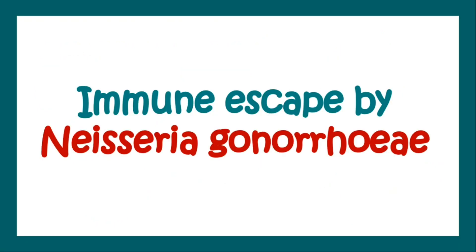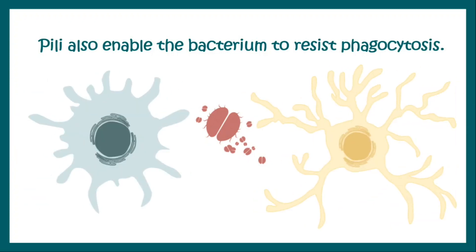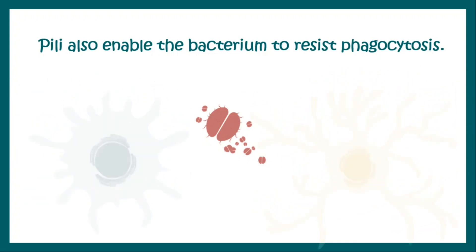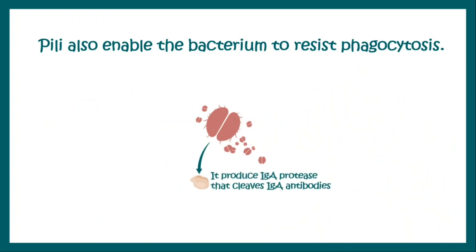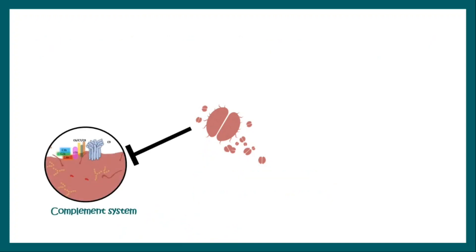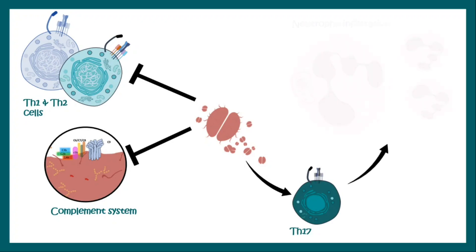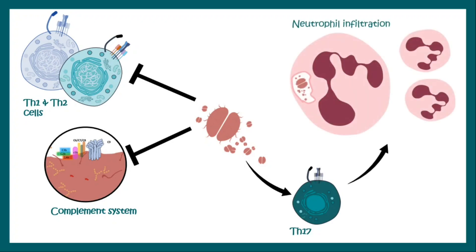Neisseria shows an interesting mechanism known as the immune escape mechanism. The pili over the gonococcus resist phagocytosis, and the enzyme IgA protease produced by the gonococcus cleaves IgA molecules, helping it evade the immune system. Apart from that, they block the complement system, block TH1 and TH2 cell actions, and through TH17 cells they infiltrate neutrophils and ultimately cause lysis of the neutrophils to escape.